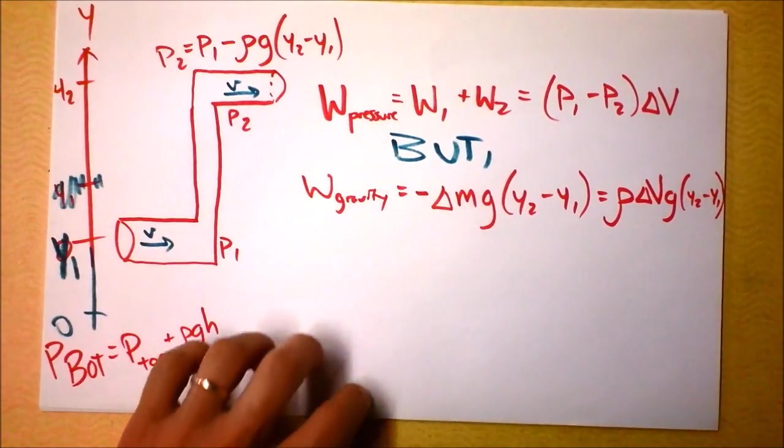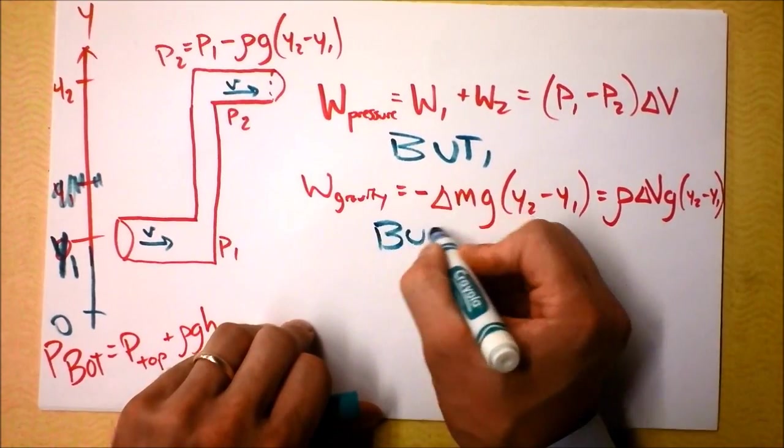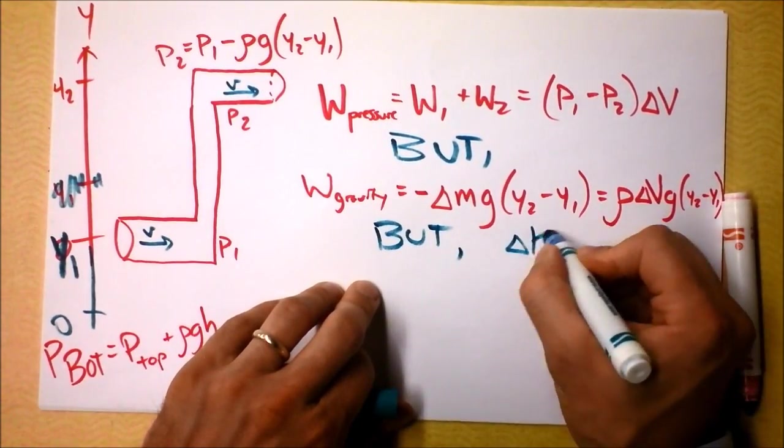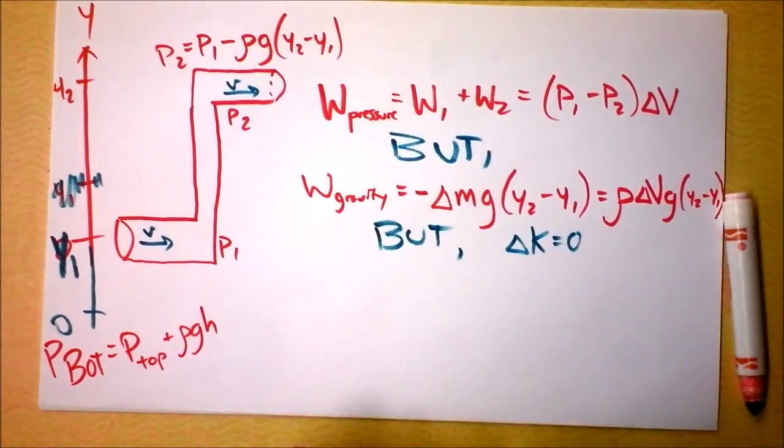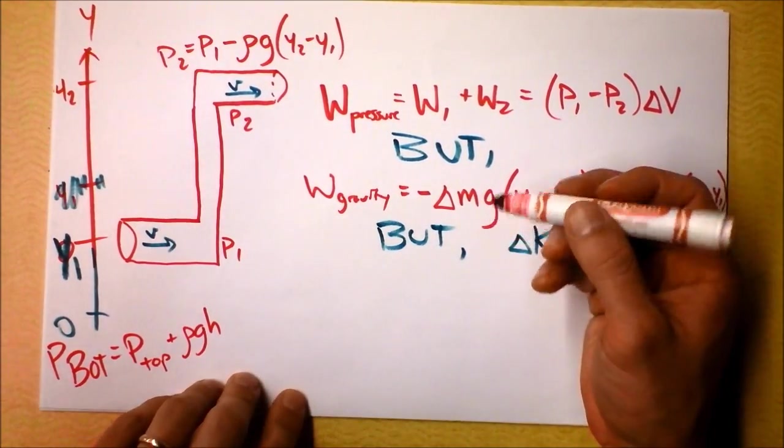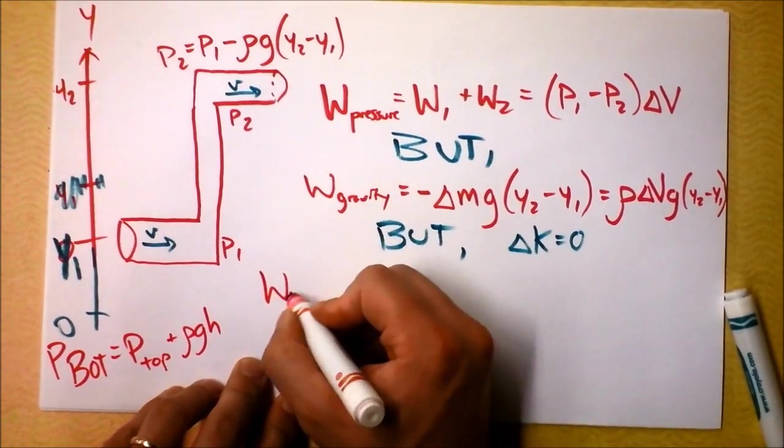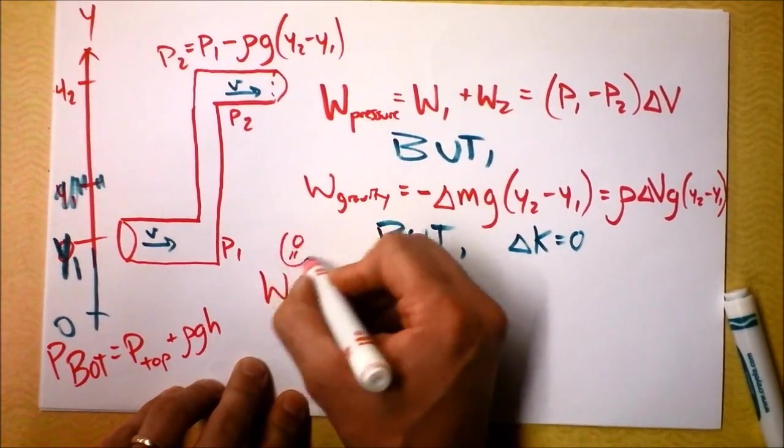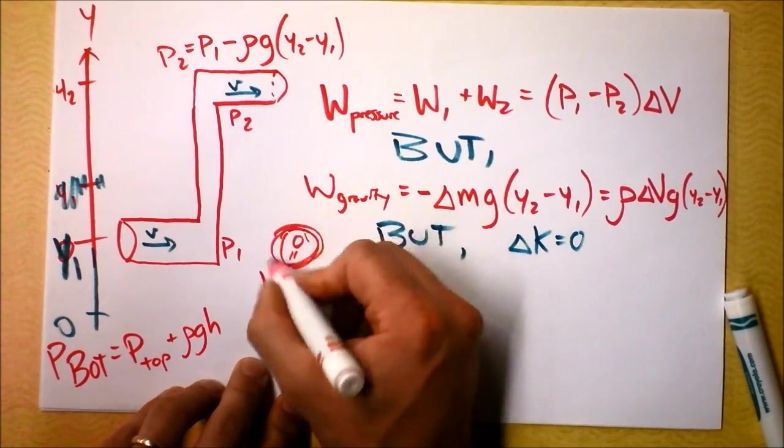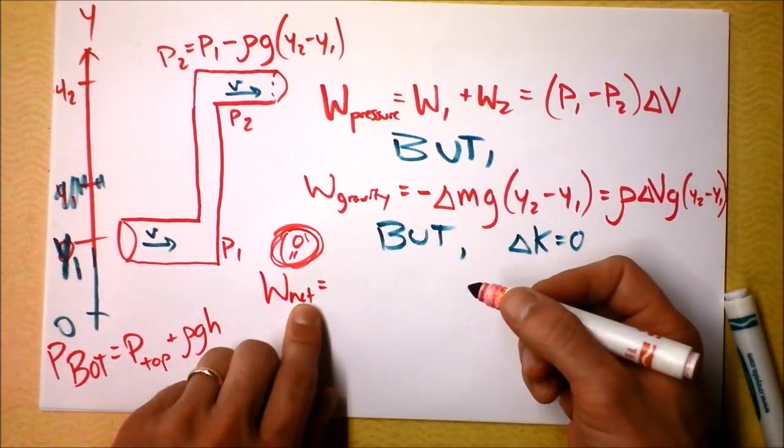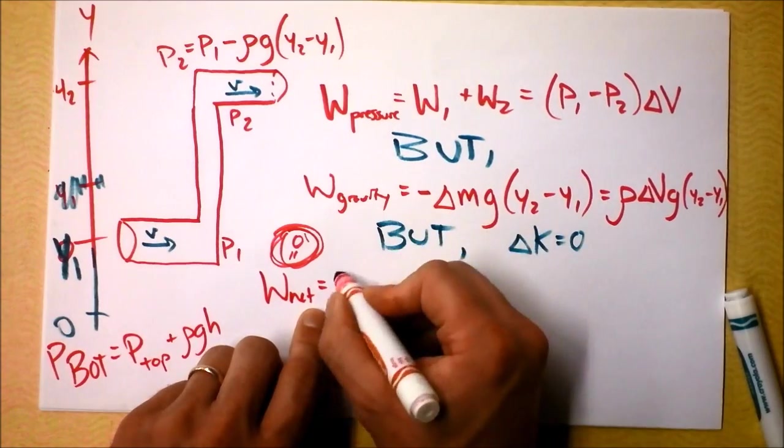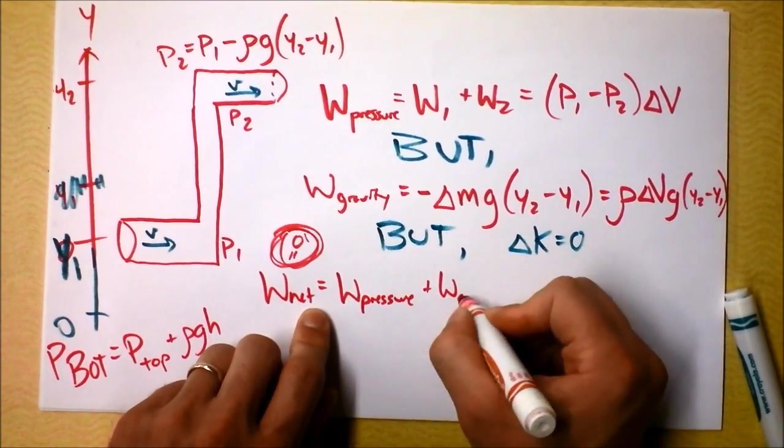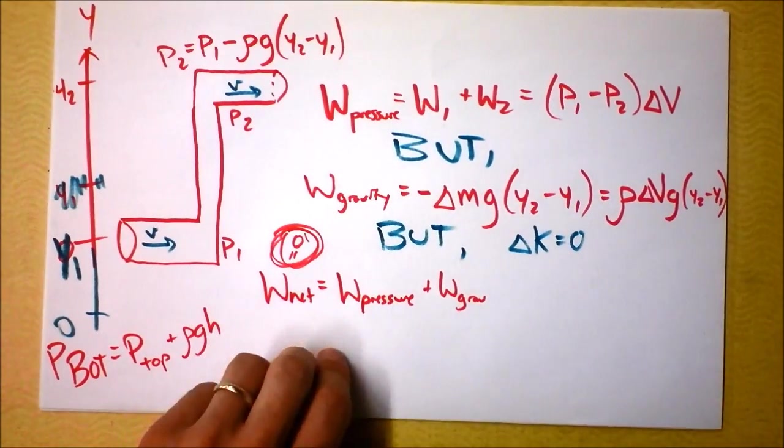Then, I want you to consider what's happening with the velocities. There's no change, right? So I'll write but, and then I'll say that the change in kinetic energy equals zero. Change in kinetic energy has something to do with work, right? So then I can say work net equals zero. Let's just remember that, that the net work is going to be equal to zero.